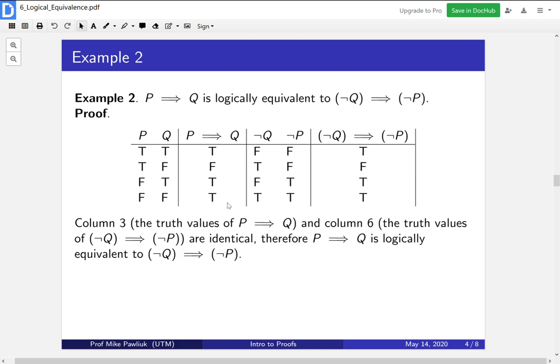Now since column three, which are the truth values of P implies Q, and column six, which are the truth values of not Q implies not P, since these columns are identical, then P implies Q is logically equivalent to not Q implies not P.